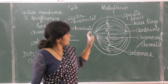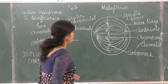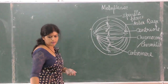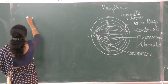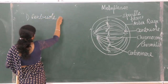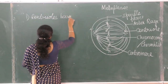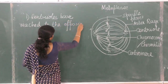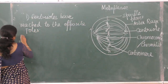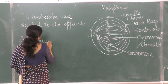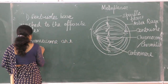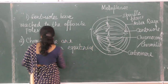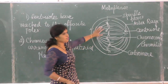So this is what metaphase is. What are the characteristic features of metaphase? The most prominent one: first, centrioles have reached the opposite poles.